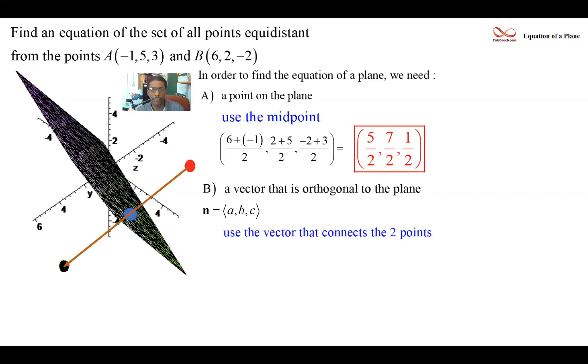We connect these two points. How do you get the vector between two points? Well, the initial point is A. In this case, the terminal point is B. You take the coordinates of the terminal point and subtract the associated coordinates of the initial point. So we'll do the six minus a negative one and two minus the five, negative two minus three. That will be the vector, and that vector is orthogonal to the plane.